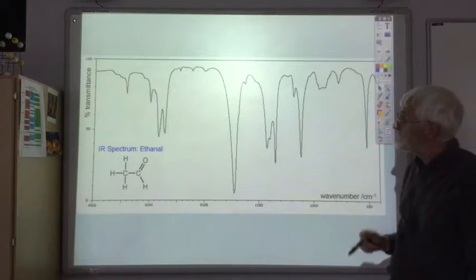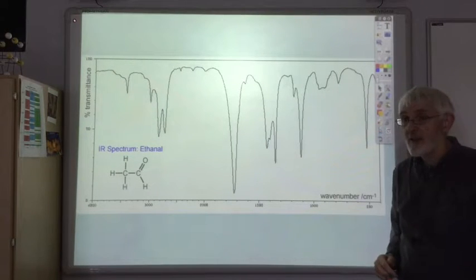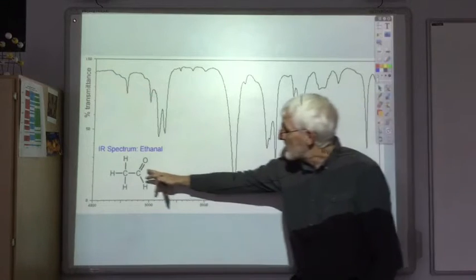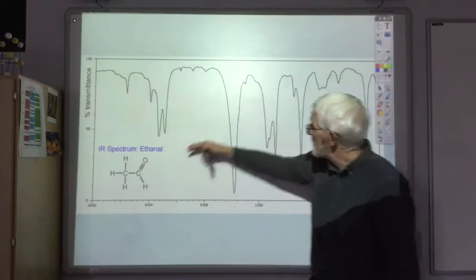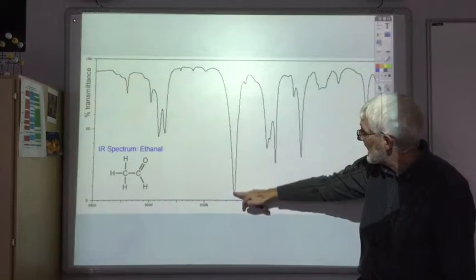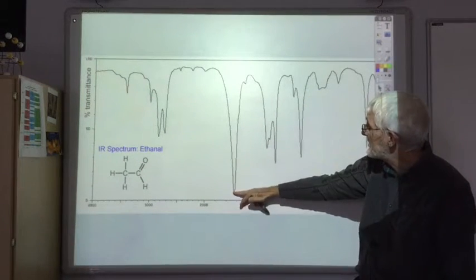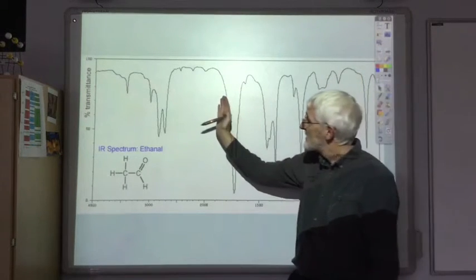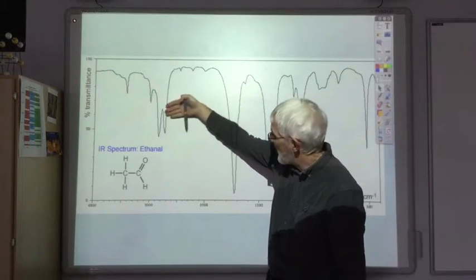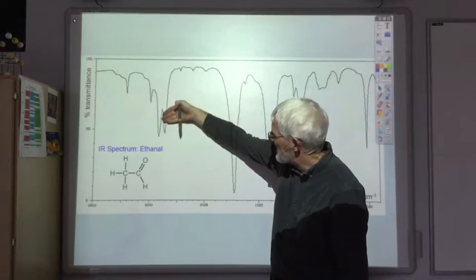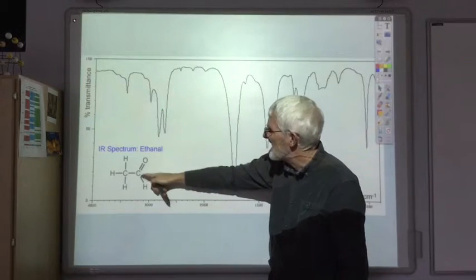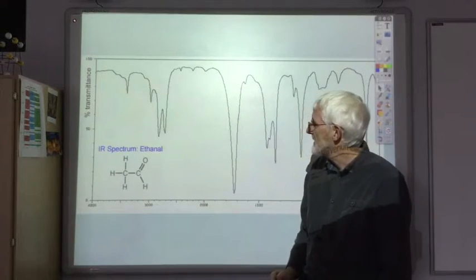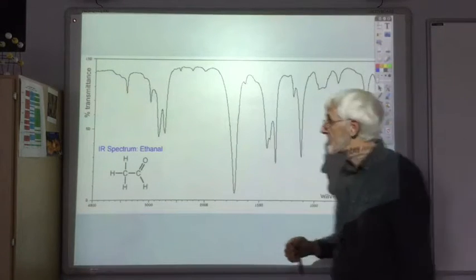This is what an IR spectrum would look like for ethanol. We've got C double bond O, so we get a big peak at 1700, ignoring all the fingerprint region. Up here, all we've got is a bit of noise just below 3000, that's due to all the CH bonds. So that's quite a simple spectrum.